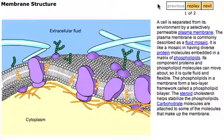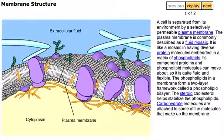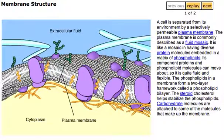A cell is separated from its environment by a selectively permeable plasma membrane. The plasma membrane is commonly described as a fluid mosaic. It is like a mosaic in having diverse protein molecules embedded in a matrix of phospholipids. Its component proteins and phospholipid molecules can move about, so it is quite fluid and flexible.